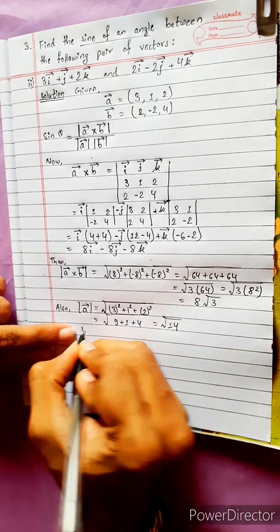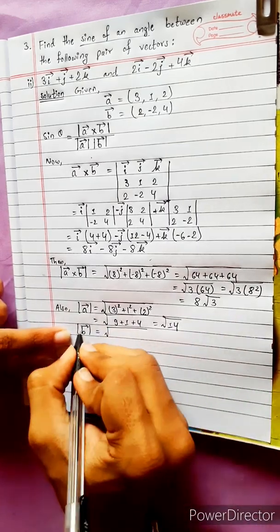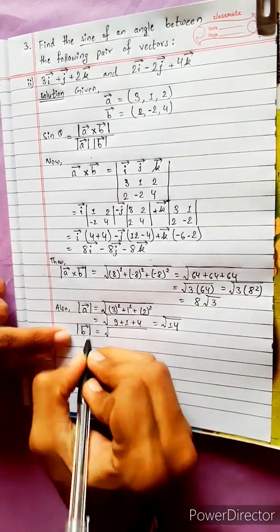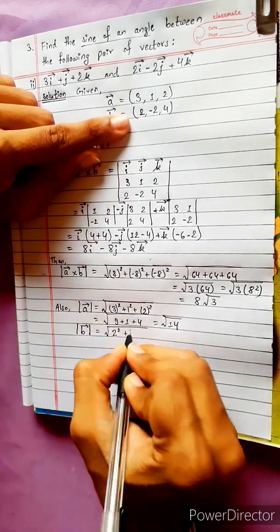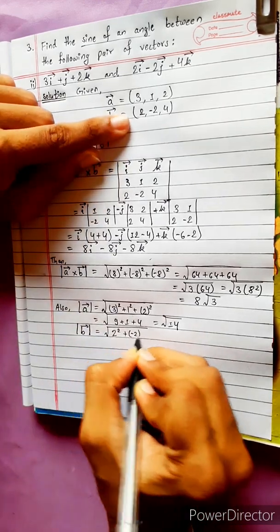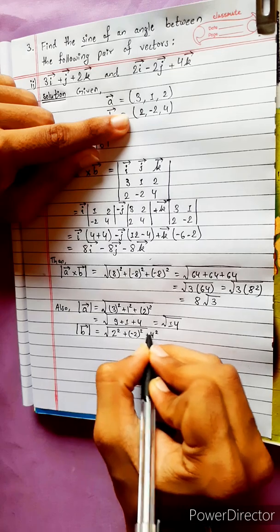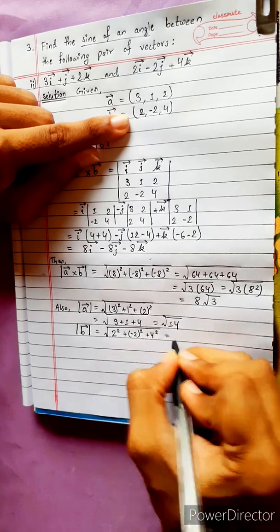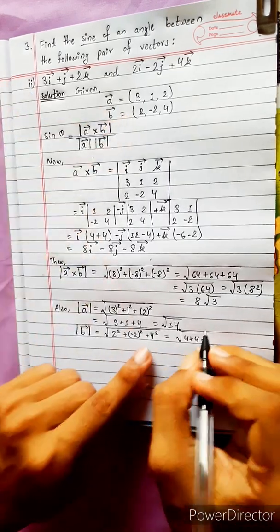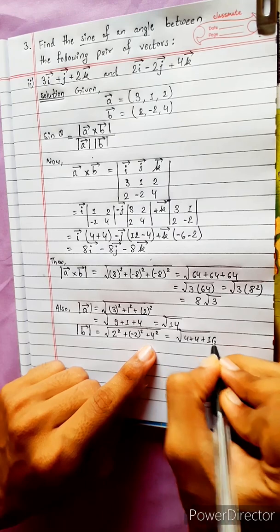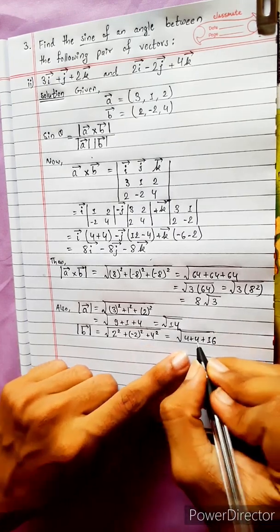And the magnitude of vector B: with components 2, minus 2, 4, the magnitude equals the square root of 2 squared plus minus 2 squared plus 4 squared, which equals the square root of 4 plus 4 plus 16, giving us the square root of 24.